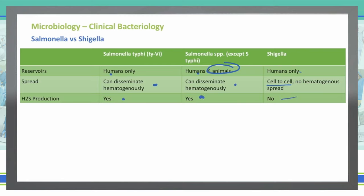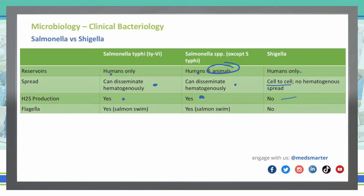Salmonella all have flagella that helps them do a salmon-type swim, beating back and forth, allowing them to move along in the blood. Both Salmonella species have that. Shigella does not, which is why it has that cell-to-cell spread — it cannot move on its own.